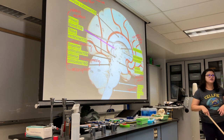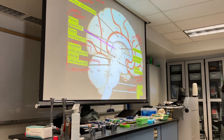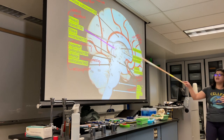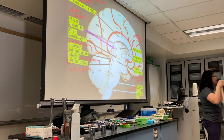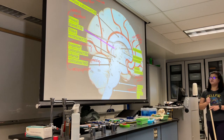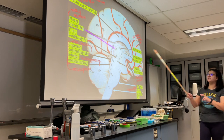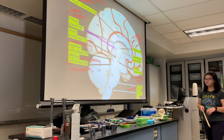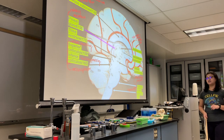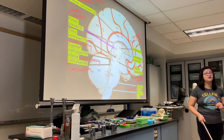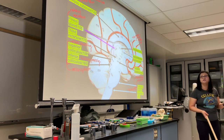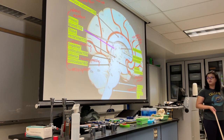The interventricular foramen — foramen meaning a hole — allows your lateral ventricles to dump their cerebrospinal fluid down into the third ventricle. In your later slides, there is a structure called the mesencephalic aqueduct, which is basically the same thing as the cerebral aqueduct — just a different name for it.